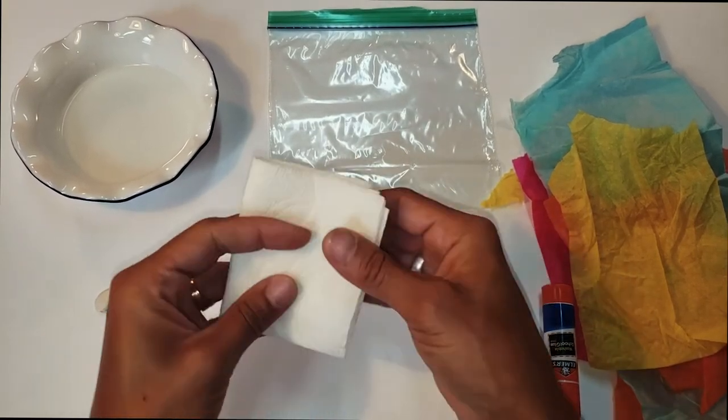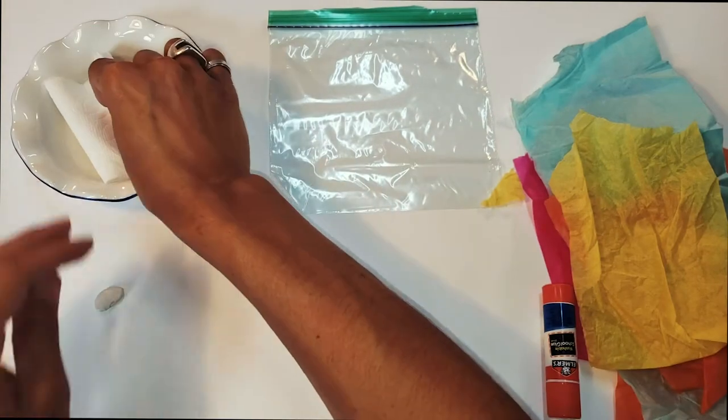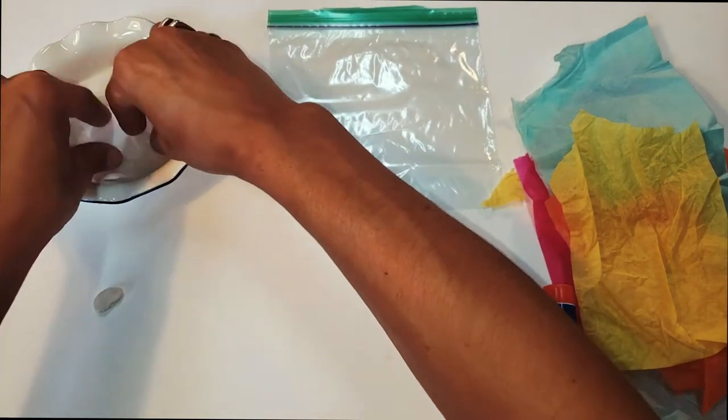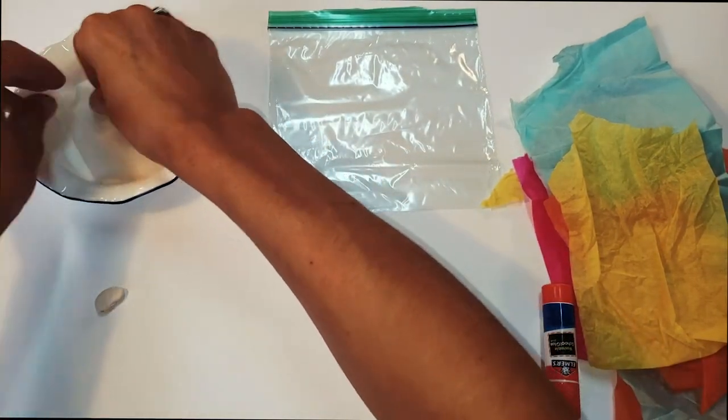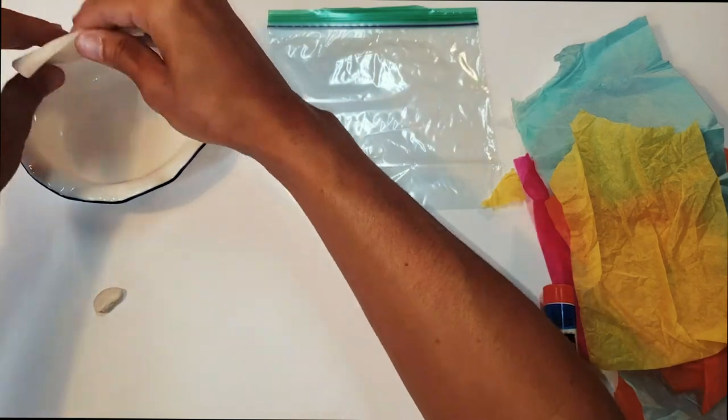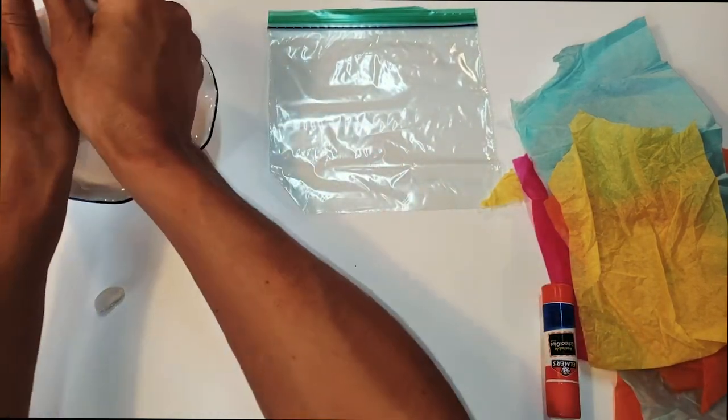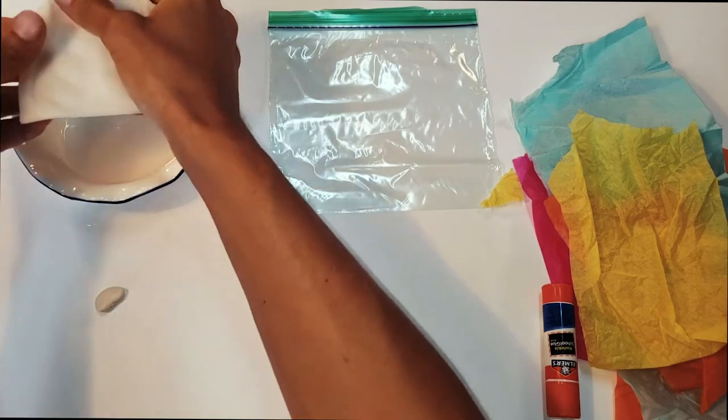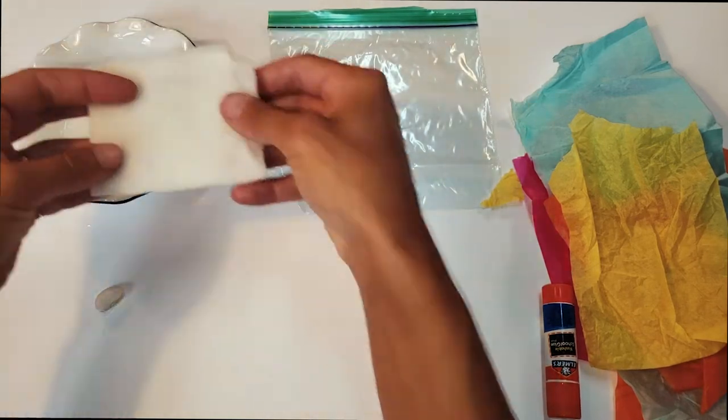Now you can do this step at your sink too, but if you happen to have a little dish and a little bit of water, soak the paper towel in the dish and then squeeze out most of the water but keep it damp.